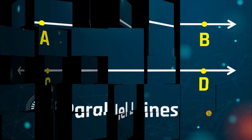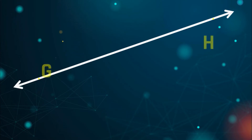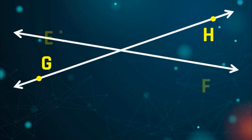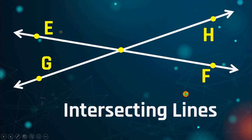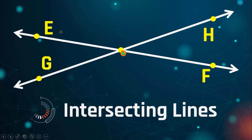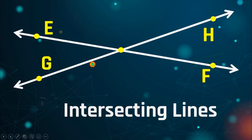Now let's proceed to the next one. I have here line GH and another line EF. You can clearly see that line EF and line GH intersect with each other, and for that we are going to name those as intersecting lines. Intersecting lines have two lines that intersect and form a common intersection which we call the vertex of that angle, so we can have different angles.